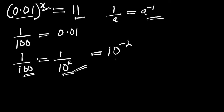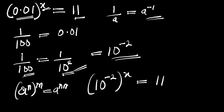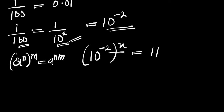Now we need to insert this where we have 0.01. So our new equation becomes 10 to the power of negative 2, all to the power of x, and this equals 11. Now let's make use of this identity: if you have a to the power of n, all to the power of m, this equals a to the power of n times m. So multiplying these two exponents, we get 10 to the power of negative 2x, and this equals 11.